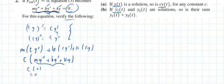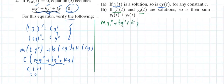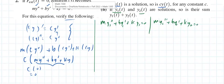The second part reads: if y1 and y2 are solutions — meaning m·y1-double-prime plus b·y1-prime plus k·y1 equals zero, and m·y2-double-prime plus b·y2-prime plus k·y2 equals zero — basically any solution must satisfy this relation.